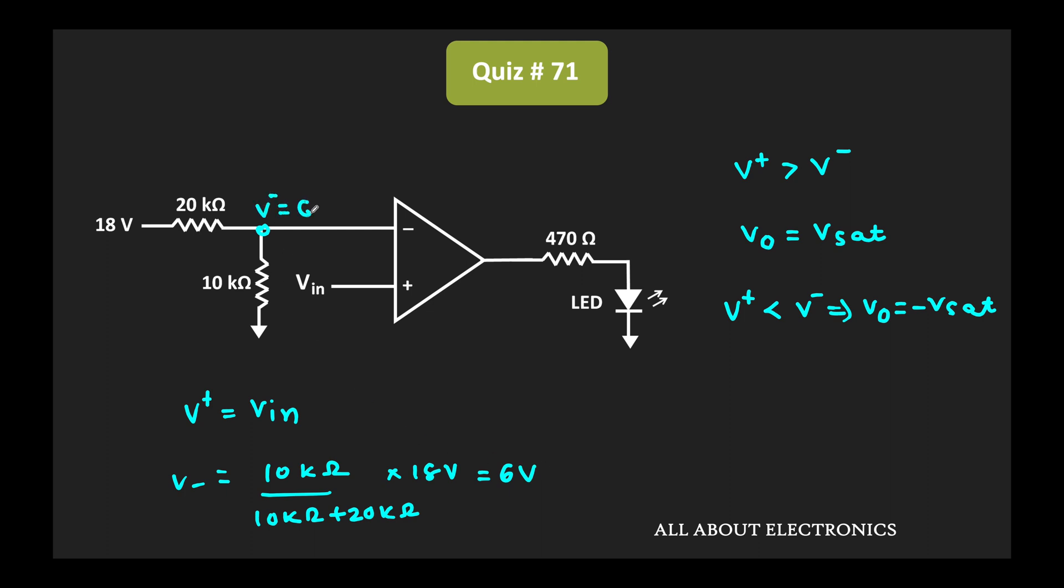And clearly as you can see, when this input voltage is greater than V minus, or in other words, whenever this input voltage is greater than 6 volt, at that time Vout will be equal to Vsat, and at that time only this LED will get turned on.